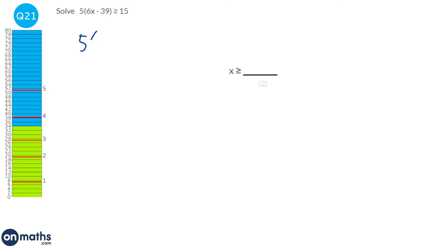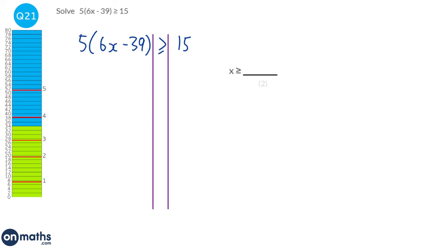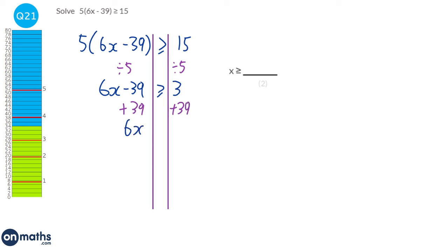Writing this out bigger with tram lines in, we can divide both sides by 5, leaving 6x minus 39 on one side and 3 on the other. Adding 39 to both sides gives 6x is greater than or equal to 42. Then dividing both sides by 6 gives x is greater than or equal to 7.